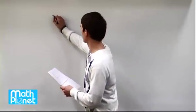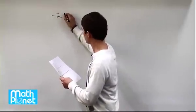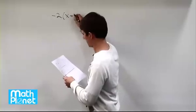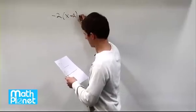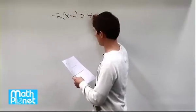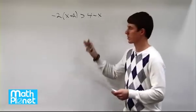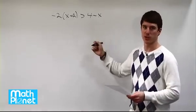Here we have an algebraic inequality. Negative 2 times quantity x plus 2 is greater than 4 minus x. So we just want to solve for this, basically simplify both sides and solve for x.